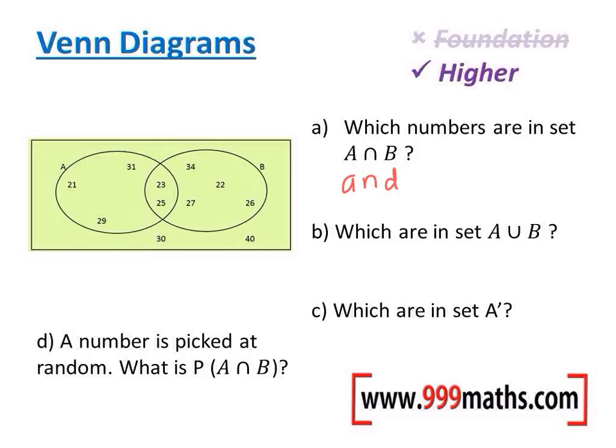Question B: which are in set A ∪ B? And that actually means OR. Question C: which are in set A', and that means NOT in A. And finally, we've got question D, which is about probability.